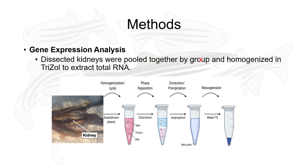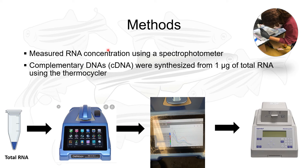The dissected kidneys were pooled by group, homogenized, and TRIzol-purified to extract total RNA, as shown in this image. Using a spectrophotometer, I measured the RNA concentration to determine the volume of one microgram of RNA necessary to synthesize complementary DNA using the thermocycler. After cDNA synthesis, the cDNA was separated into approximately 36 tubes: seven tubes for the beta actin loading control and 29 tubes with the different primers for NHE3A and NHE3B along with the master mix.